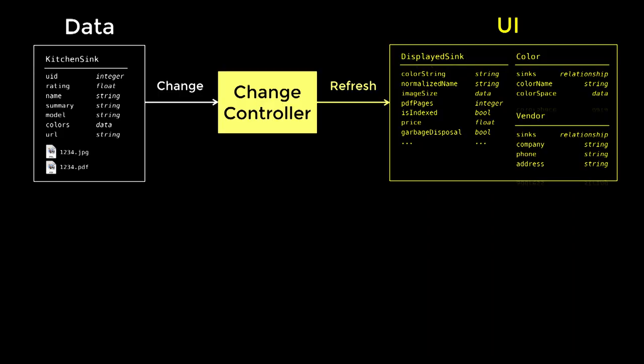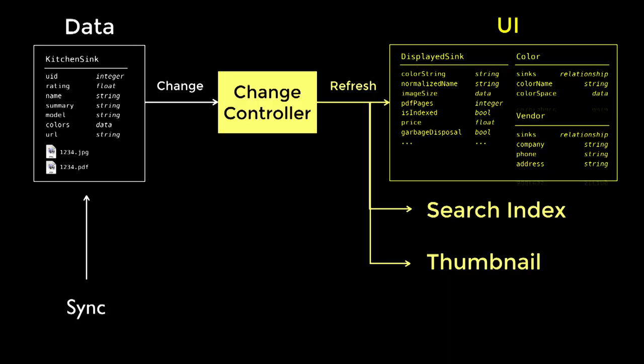To link the two, we have a change controller in between. It listens to changes in the data and notifies the UI database so that it can refresh the derived data and keep it up to date. The nice thing when we did this was we realized this can be used for other things in the app — we have this workflow we can also apply to the search index, to thumbnail generation, to things like auto-generating a PDF that updates as the data changes. So it gives a really nice architecture for this kind of stuff. And sync also becomes easier because we can just focus it on the actual critical data and not have to worry about sync everywhere else in the app.